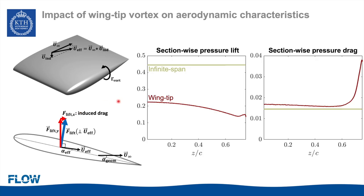Looking at lift and drag generation by section, we see a significant drop in lift generation for a finite span wingtip case compared to an infinite span one at the same angle of attack, while there is a simultaneous increase in pressure drag, meaning a significant drop in aerodynamic efficiency of the wingtip.